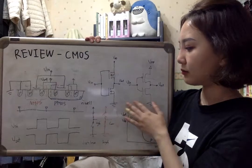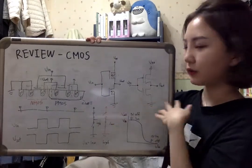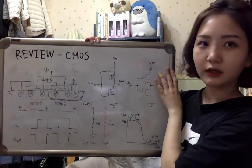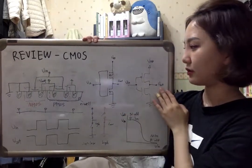We can draw the symbols like these two figures. The upper one is PMOS and the other is NMOS.